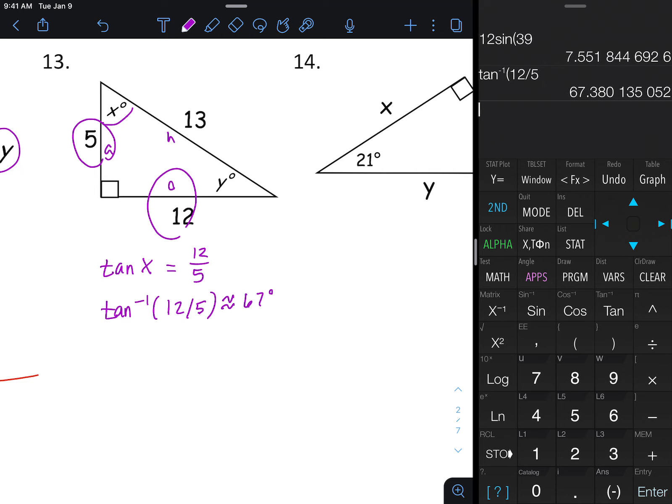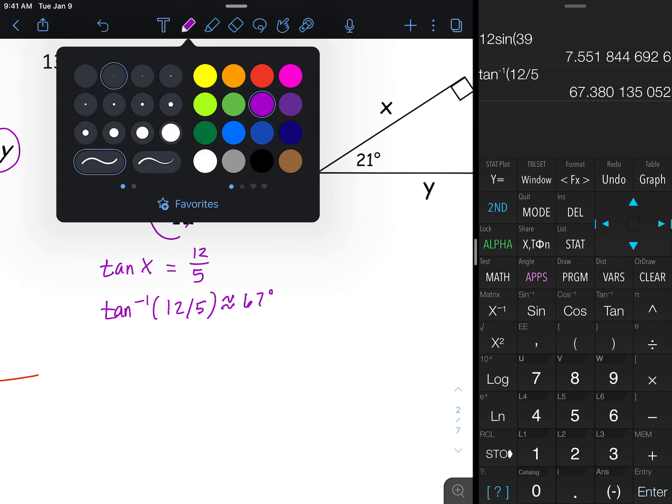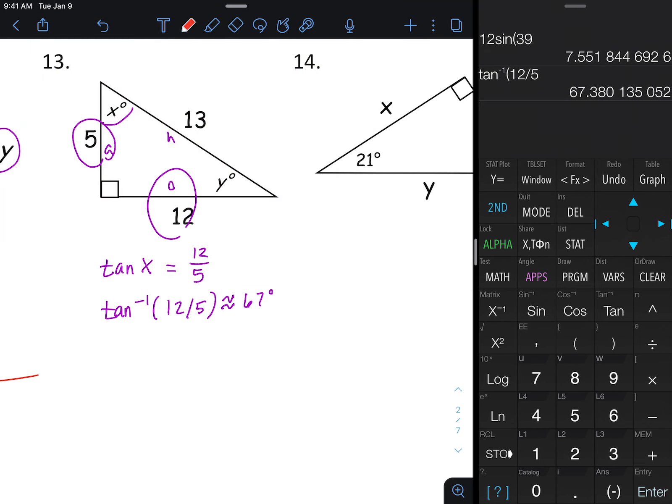Okay, now you could do 90 minus 67 to get your 23 degrees for the other answer, but I usually like to just double check. If we're doing with respect to angle Y, the opposite changes, the adjacent's right there, and then the hypotenuse stays the same. I'm going to use the 5 and the 12 numbers again right here. This time it's going to be tangent of Y degrees, and then equals 5 over 12, so basically it's the flipped version of the fraction. And then that'd be tangent inverse, this is calculator-ready form, tangent inverse of 5 divided by 12.